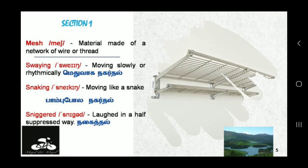Swaying — moving slowly or rhythmically. Swaying means moving slowly. Snaking — moving like a snake. So the train moves like a snake along the track — that is called snaking.